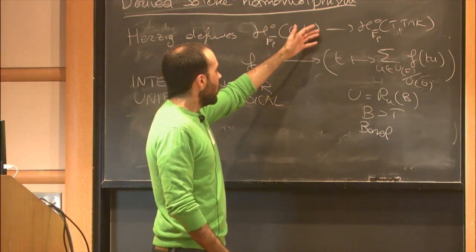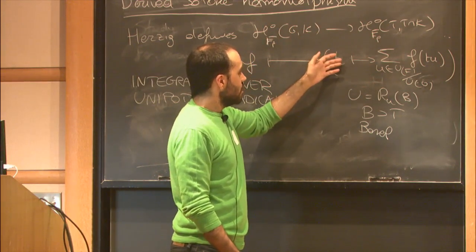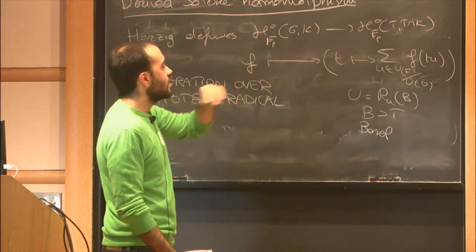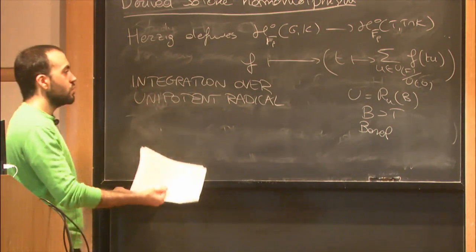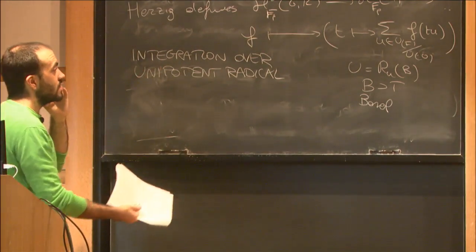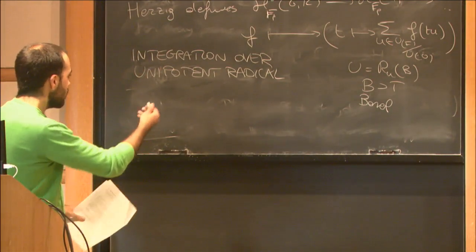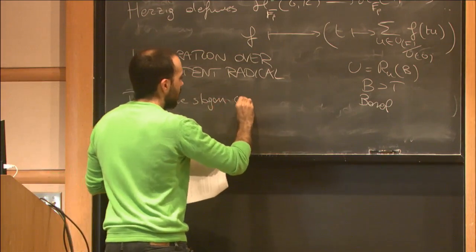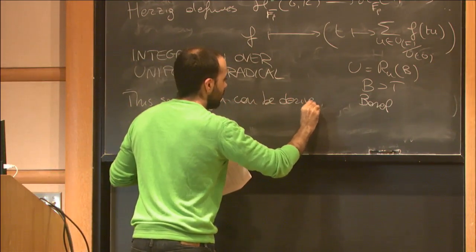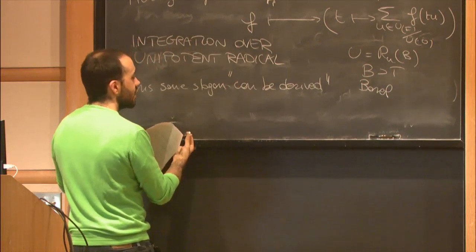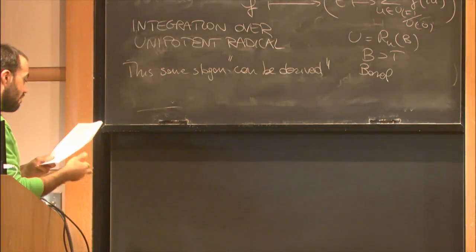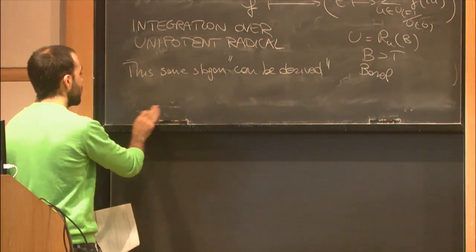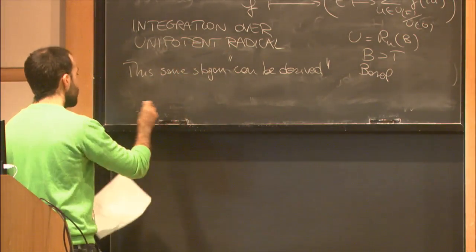This type of slogan is actually fairly powerful. For instance, if you have an intermediate Levi subgroup between G and T, you can define an intermediate Satake map from (G,K) to (M, M∩K) by the same slogan, integrating over the unipotent radical of a parabolic subgroup whose Levi is M. Using the same slogan, this can be derived — I can upgrade this to a map for my derived Hecke algebra.